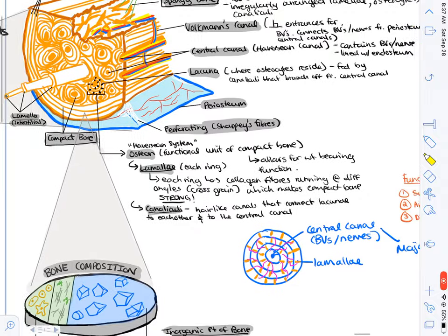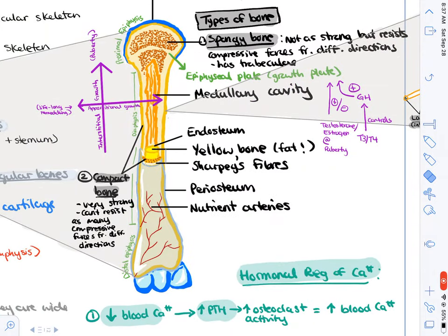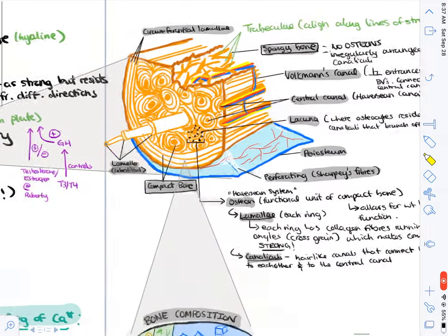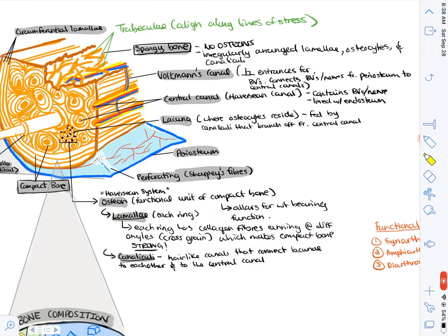That is the organization of compact bone. Now let's look at spongy bone. Spongy bone - first thing that you must know - it does not have osteons, so it doesn't have that functional unit and that same organization. But it does have lamellae, they're just not organized in this ring fashion. With spongy bone, the lamellae are haphazard and irregular, and they form these things called trabeculae. That really is what allows spongy bone to resist forces in multiple directions.